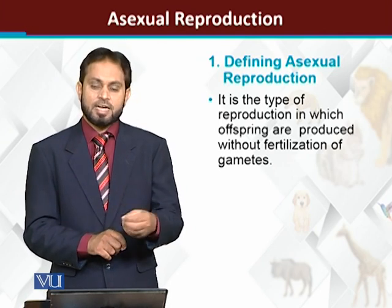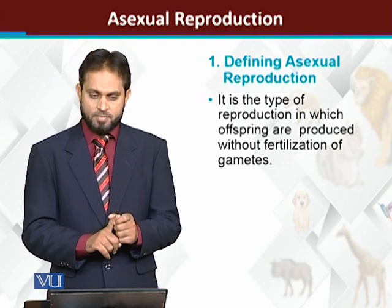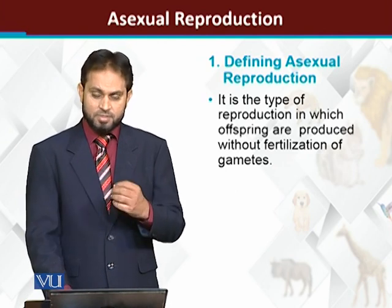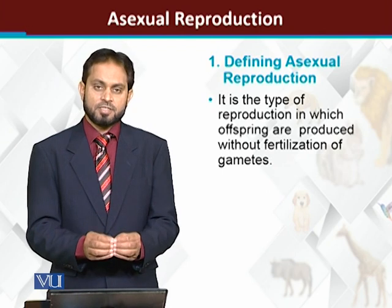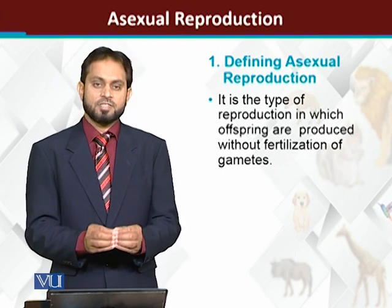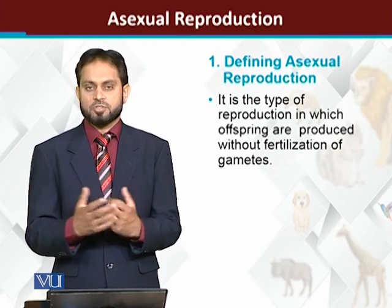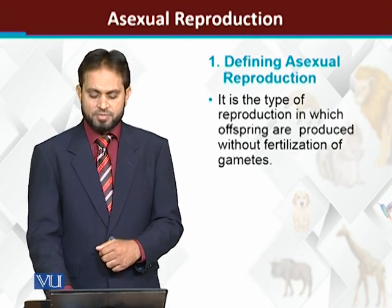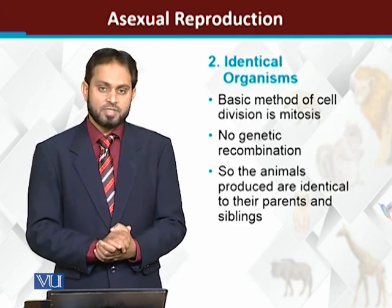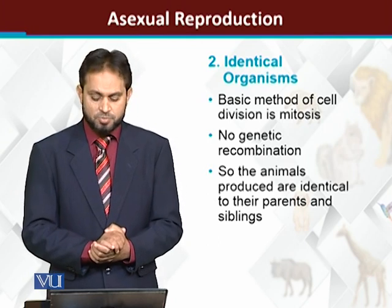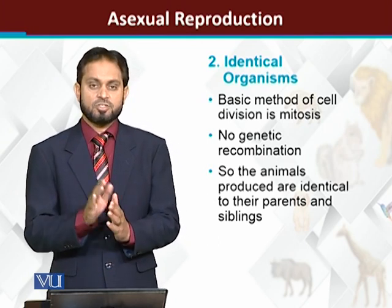One organism can reproduce and continue its generation. Another definition: asexual reproduction is the method of reproduction in which there is no process of fertilization. So what is the output of asexual reproduction? Asexual reproduction is basically due to mitosis cell division.